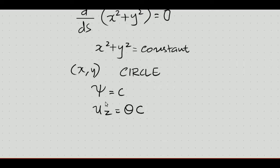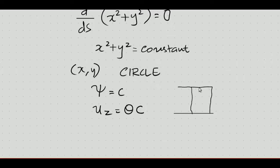Since uz is independent of the x and y coordinates, we can say that if we take any cross section, it will be displaced uniformly — meaning plane sections remain plane even after twisting. This confirms the circular cross-section behavior.